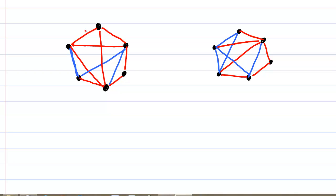Each person is represented by a black dot, and there's a red line between two people if they're enemies with each other, and there's a blue line between two people if they're friends with each other.